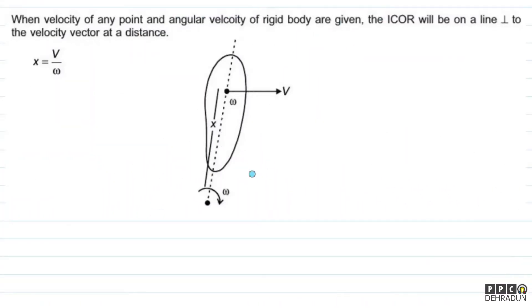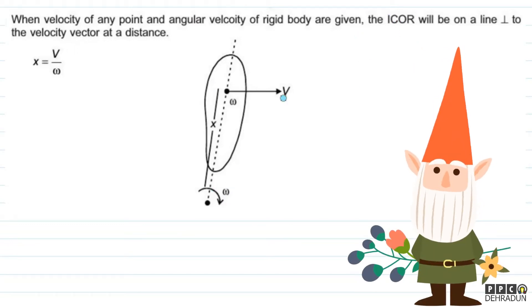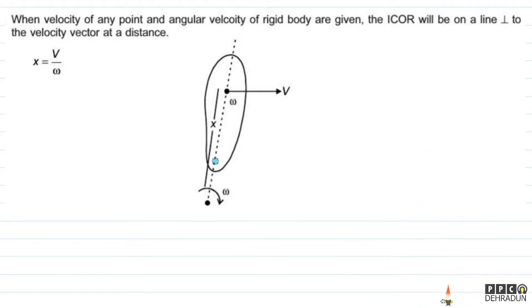Let's discuss this question. We have to find out the instantaneous center of rotation (ICOR). When the velocity of any point and angular velocity of a rigid body are given, the ICOR will be on a line perpendicular to the velocity vector at a certain distance.